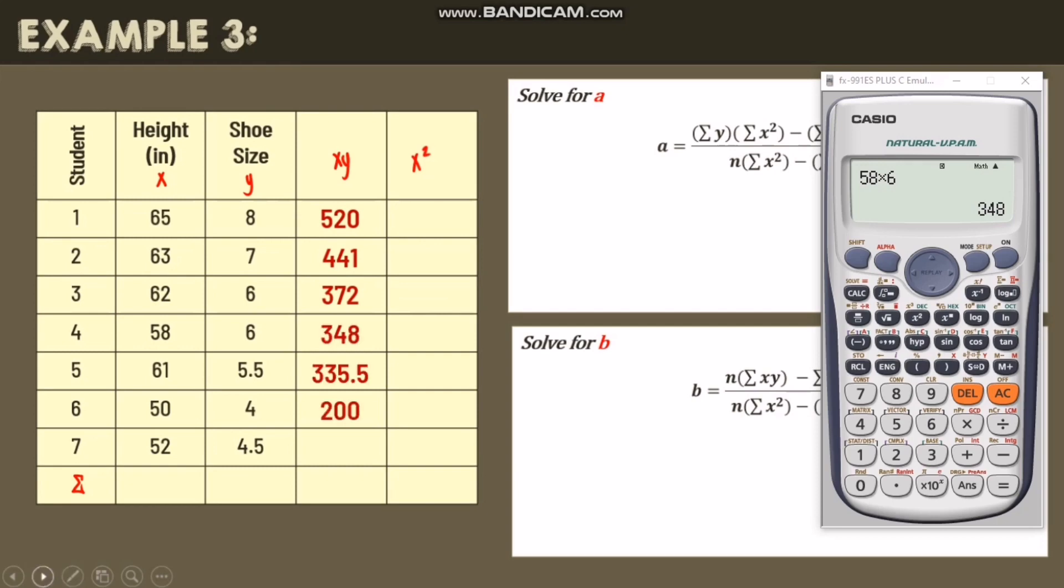And so on. Next we have the x squared. So the x column, we just square it. So first, we have 65 squared, so we have 4,225.